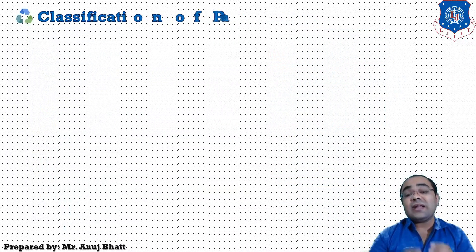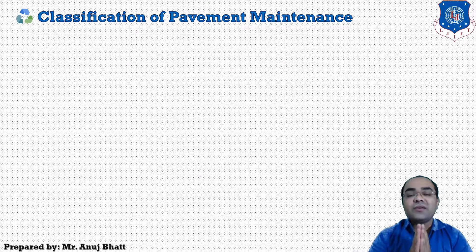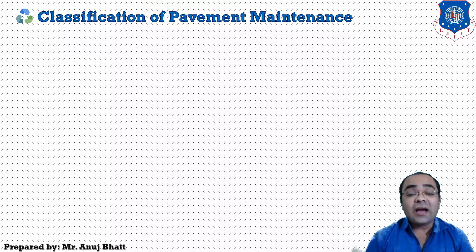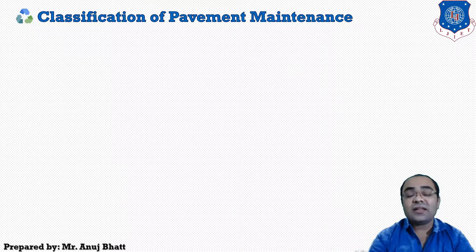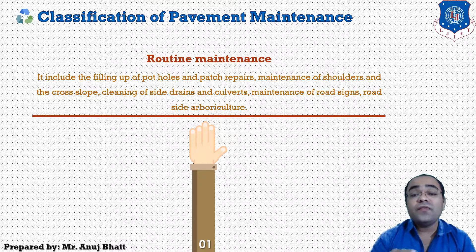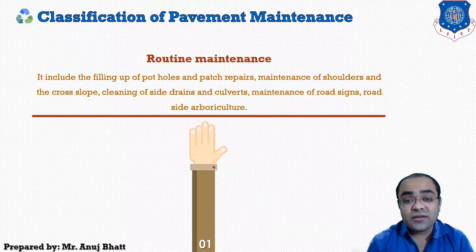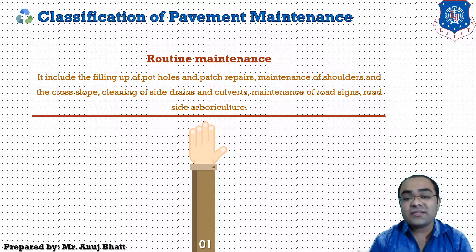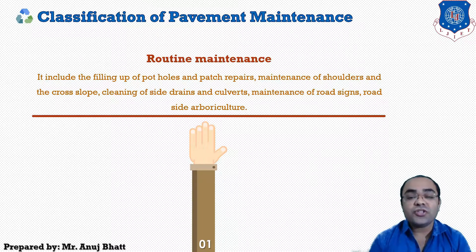The next topic is the classification of road maintenance. Road pavements are classified into three categories. The first is routine maintenance, which includes filling up of potholes, patch repairs, maintenance of shoulders and cross drains, cleaning of side drains, cleaning of culverts, and maintenance of road signs and road arboriculture.